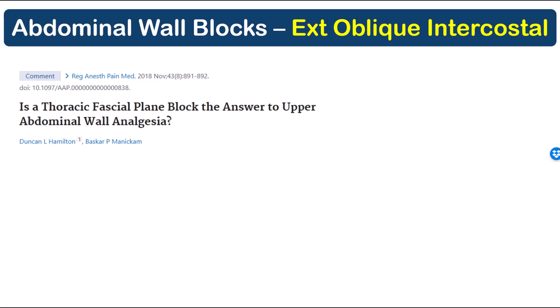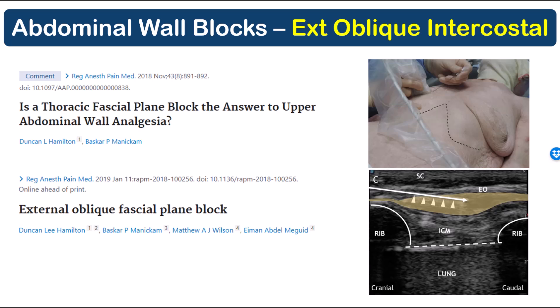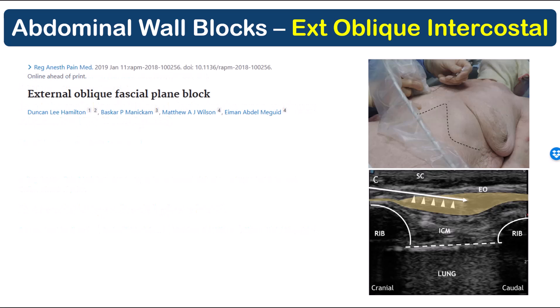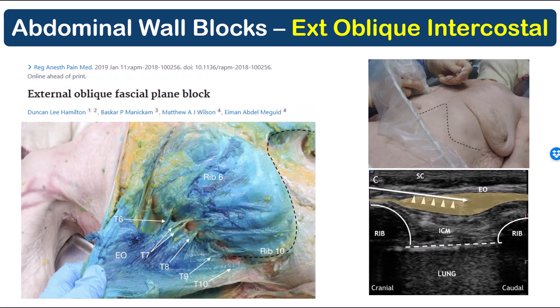The external oblique intercostal block was first described by Hamilton and Manicum in 2018, and they elaborated on it in another letter in which they reported results of injection in one cadaver, both superficial and deep, to the external oblique muscle at the level of the sixth intercostal space in the mid-clavicular line. They didn't describe the pattern of spread with the superficial injection, but noted staining of the lateral cutaneous nerve branches with a deep injection.